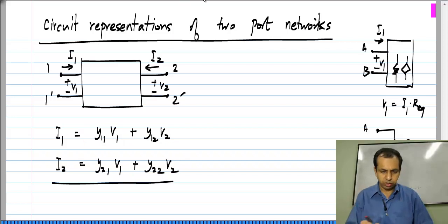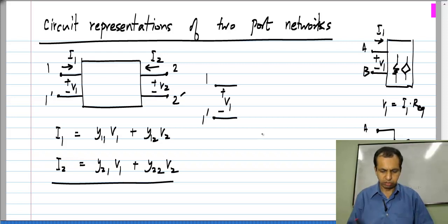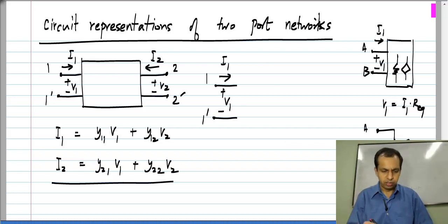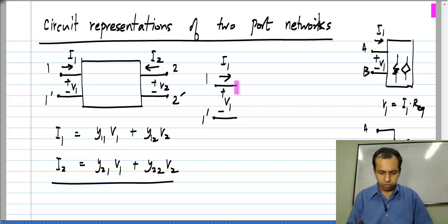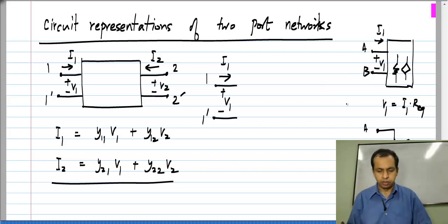For each of these terms there will be a corresponding element. Let us say this is port 1, and we have V1 across it. The current flowing into port 1 is a sum of two parts: Y11 times V1 plus Y12 times V2. Let us look at the Y11 times V1 term. It is flowing into port 1 and it is also related to the voltage between the same two terminals 1 and 1-prime.